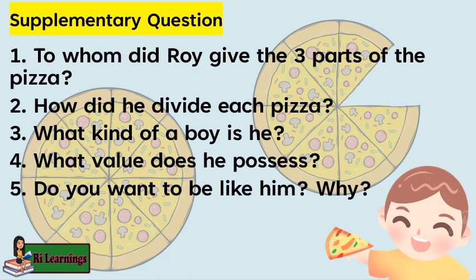Let's first answer the following questions about the story problem. 1. To whom did Roy give the 3 parts of the pizza? 2. How did he divide each pizza? 3. What kind of a boy is he? 4. What value does he possess? 5. Do you want to be like him? Why?